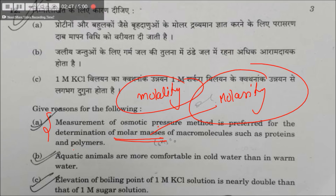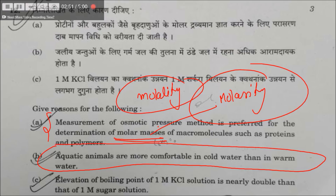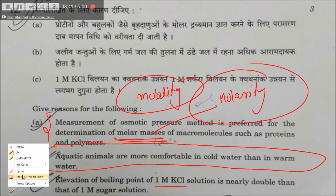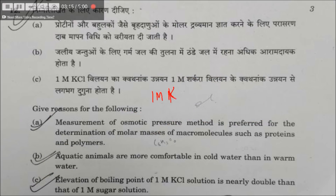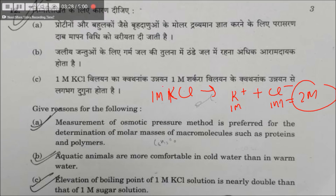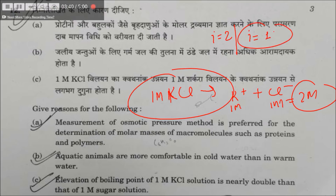Aquatic life is more comfortable in cold water because the solubility of oxygen is greater at lower temperatures — as temperature increases, solubility of oxygen decreases. The elevation in boiling point for 0.1 molar KCl is greater than for a sugar solution because KCl dissociates to give K⁺ and Cl⁻, making it effectively 2 molar. The van't Hoff factor for KCl is 2, while for sugar it is 1 — greater the van't Hoff factor, greater the colligative property.